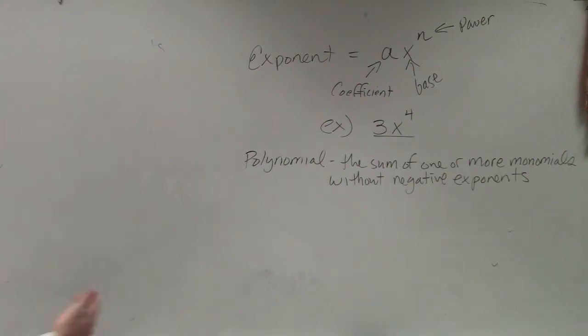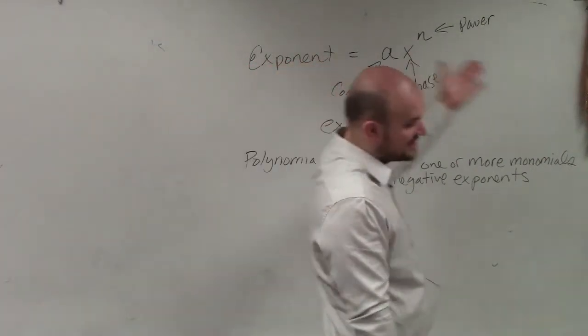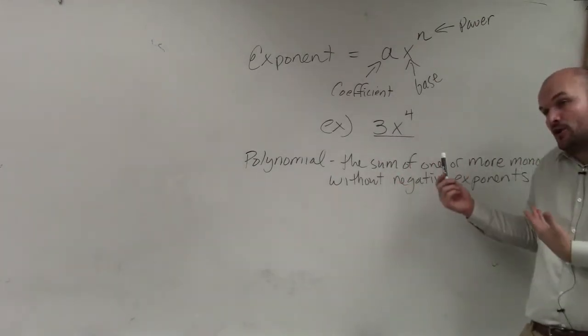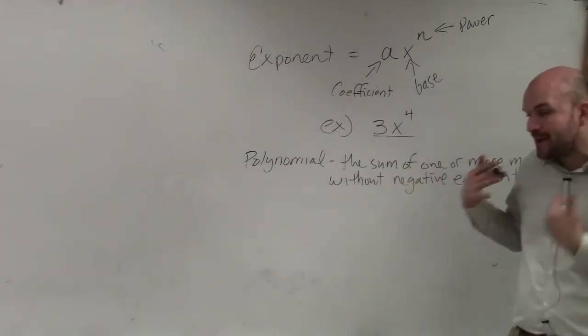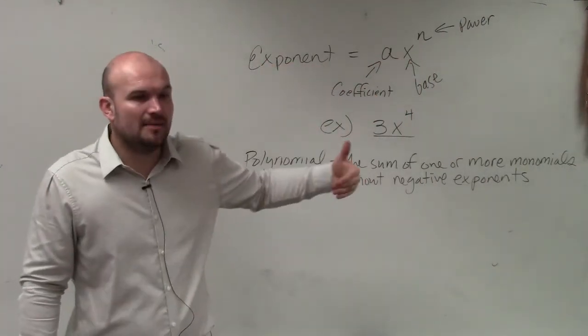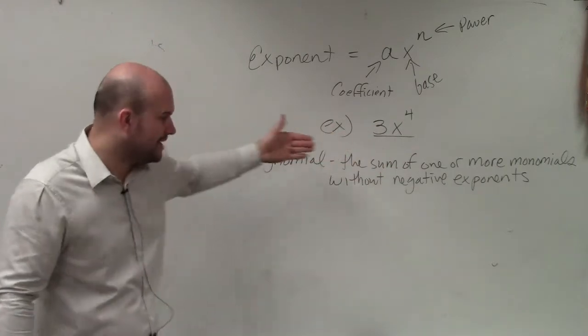The next thing is we have a coefficient and an exponent, which we talked about, which basically is a term, or in other case, a monomial. A polynomial is basically going to be a monomial or the sum of one or more of those monomials.